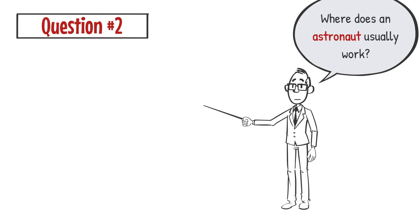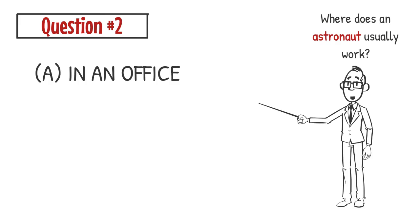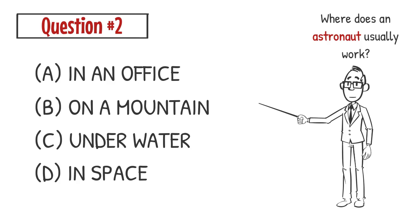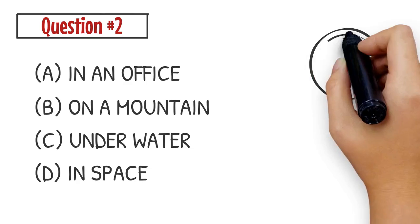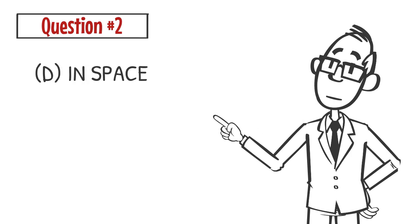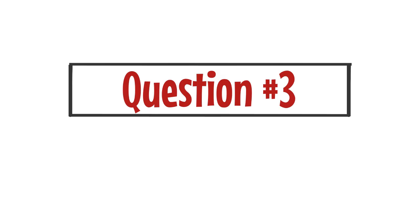Question number 2: Where does an astronaut usually work? A. In an office B. On a mountain C. Underwater D. In space. The correct answer is D. An astronaut usually works in space.